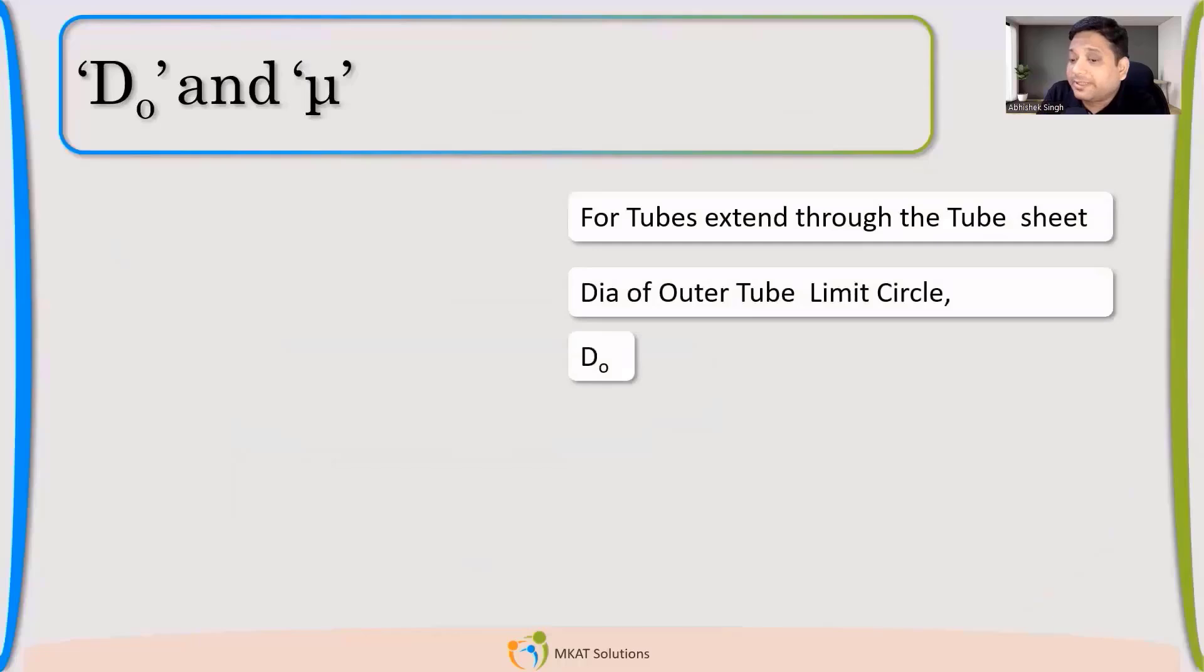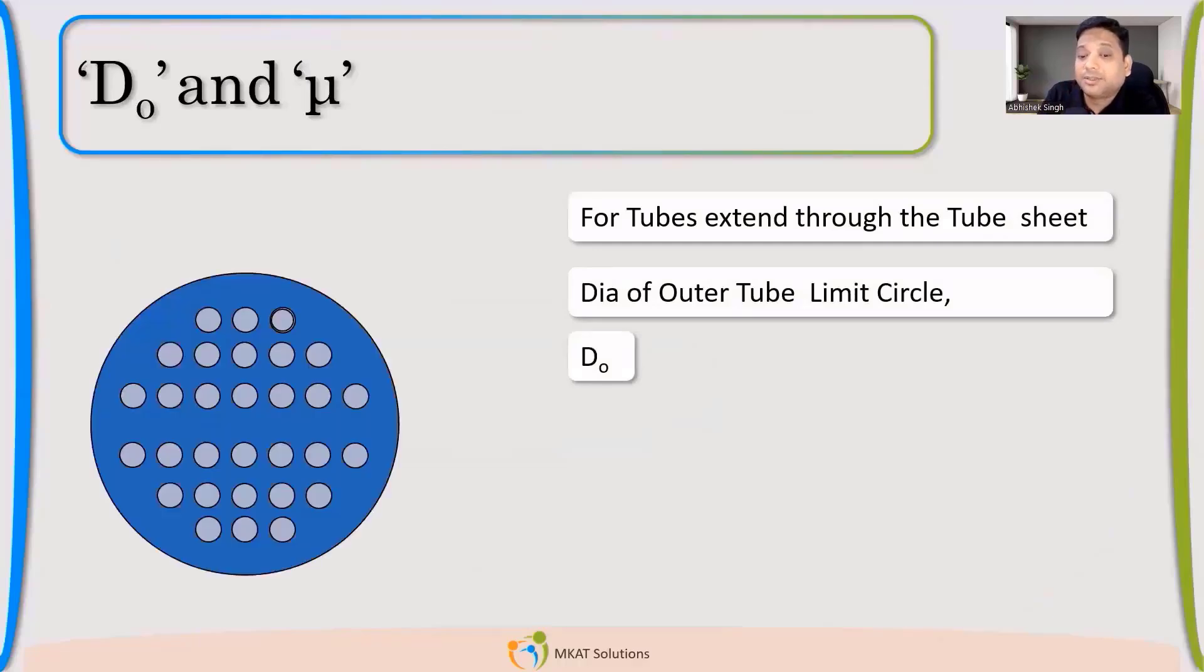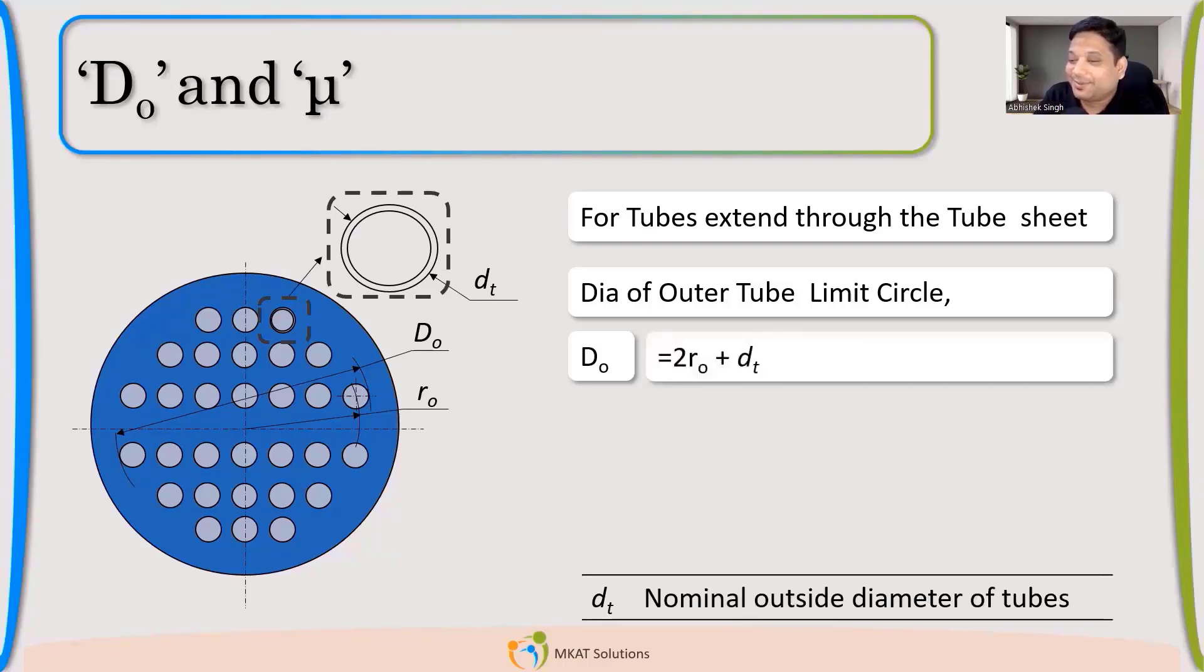So D0, which is the outer tube limit circle. If this is my tube sheet, then the outer tube limit circle, we can definitely calculate if you know R0. R0 is the radius of the outermost tube, whatever tube is located at the farthest distance. So if I know R0, DT is the OD of the tube, then what will be my D0? Simple: 2R0 plus DT.